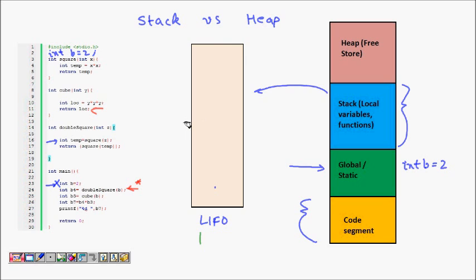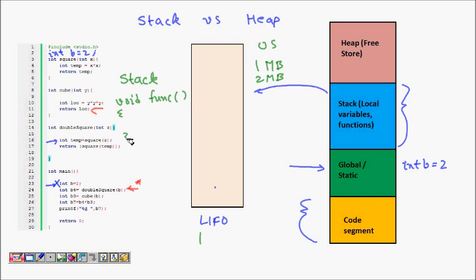Now, what is the heap? One important thing to note is that your stack memory is fixed. When a program or thread starts, the operating system allocates maybe 1MB or 2MB to your stack. So if you write a recursive function — say void func(int x) that calls itself — your stack is limited.